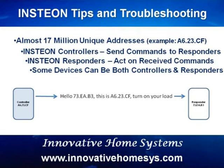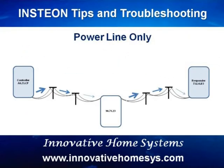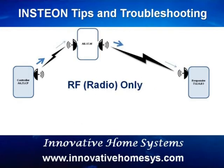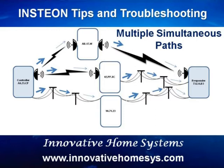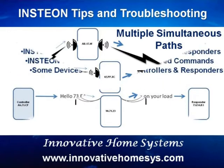The message is either sent out over your home's power line or over the air via a radio or RF signal, or in some cases both. Whenever another Insteon device hears a message that is not intended for it, it retransmits or repeats the message. If multiple devices hear the message, they all repeat the message in unison, effectively making the transmission even stronger. Because of this phenomenon, the more Insteon devices in use in your home, the better the entire network works.